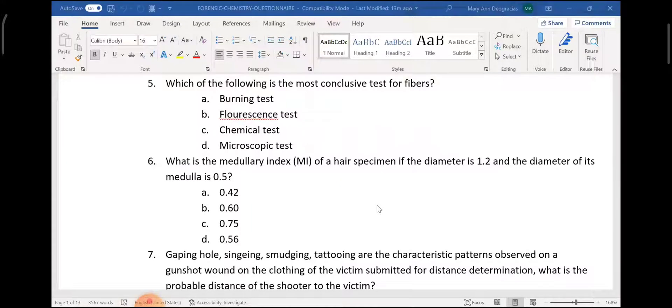The chemical test also gives general classification. So A, B, C are general classifications, while the microscopic test can specifically give the characteristics of different kinds of fibers.